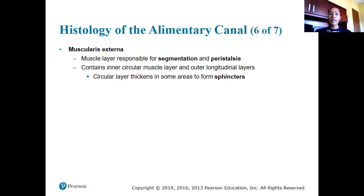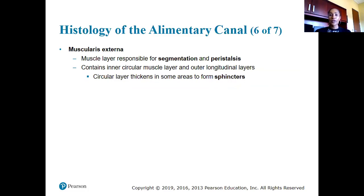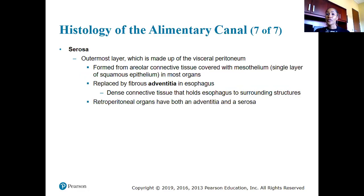The muscularis externa is the thicker muscular portion of the GI tract, responsible for segmentation and peristalsis. It contains an inner layer of circular muscle and an outer layer of longitudinal muscle. The circular layer thickens in some areas to form sphincters — structures that open and close based upon pressure.